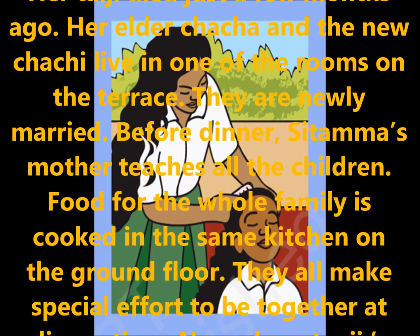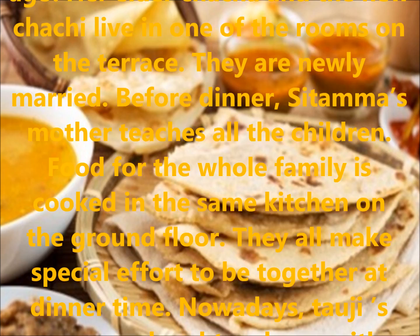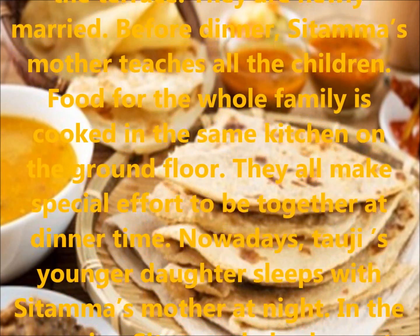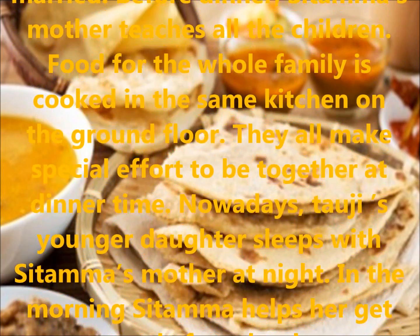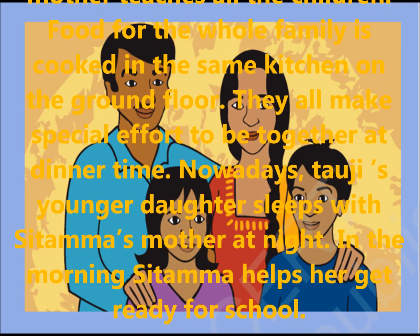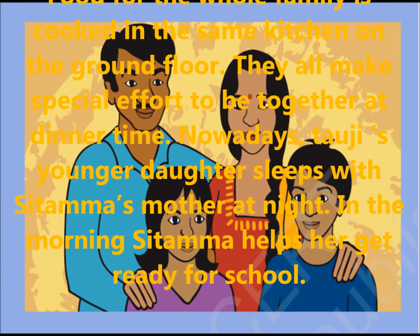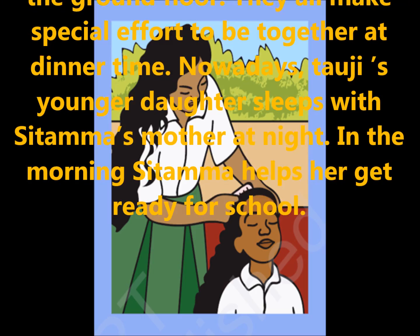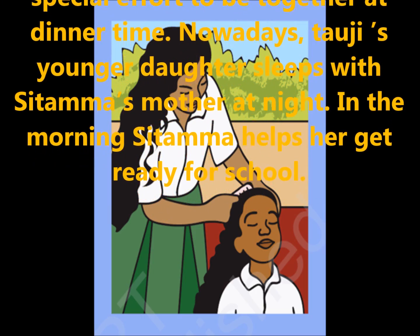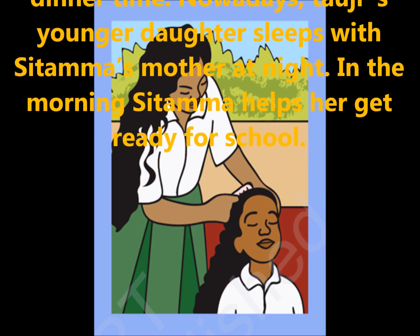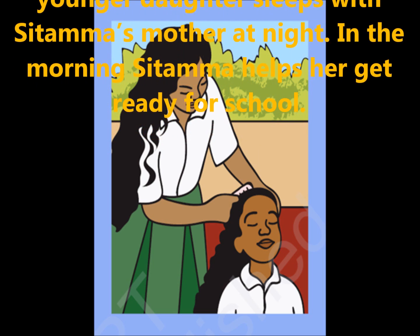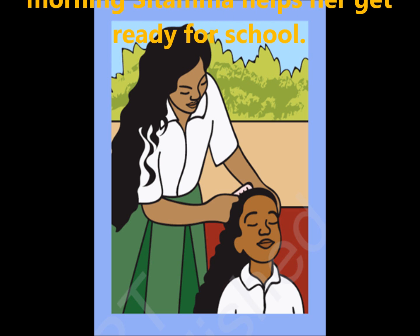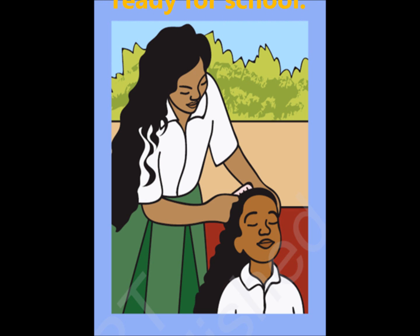Before dinner, Sitama's mother teaches all the children. Food for the whole family is cooked in the same kitchen on the ground floor. They all make a special effort to be together at dinner time. Nowadays, tauji's younger daughter sleeps with Sitama's mother at night. In the morning, Sitama helps her get ready for school. Sitama's family is a big joint family because all the family members live together.